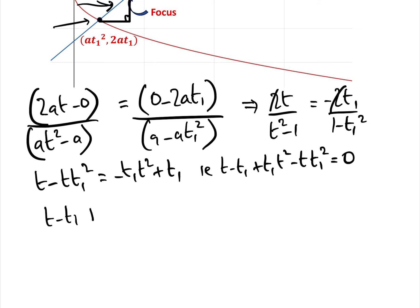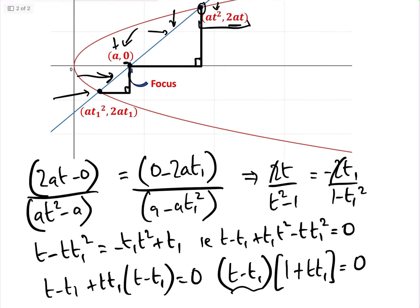Bear with me because it's well worth it because we get a lovely little formula at the end. So, i.e., t minus t1 add tt1 times t minus t1 equals 0. Now what we can do is take out t minus t1, leaving us with 1 plus tt1 equals 0. So either t equals t1,